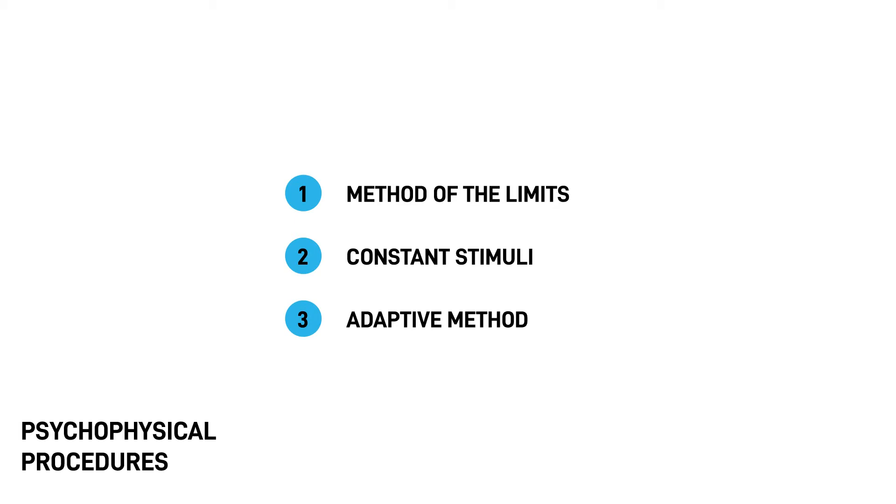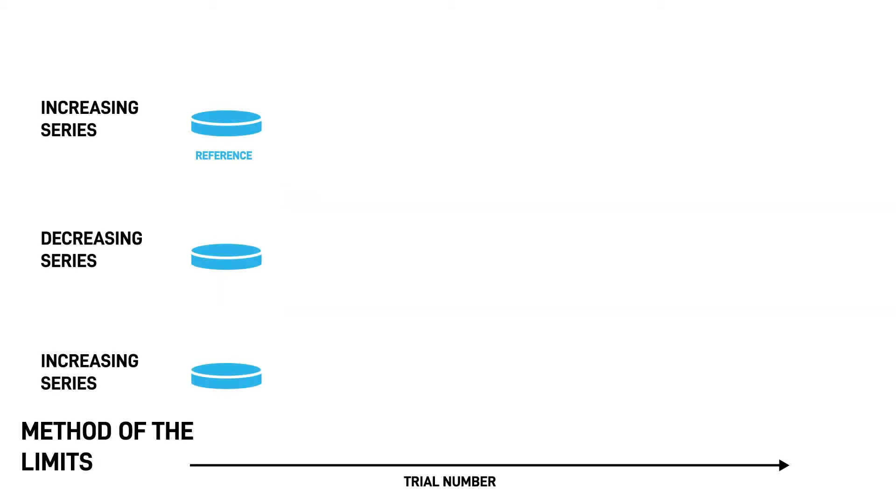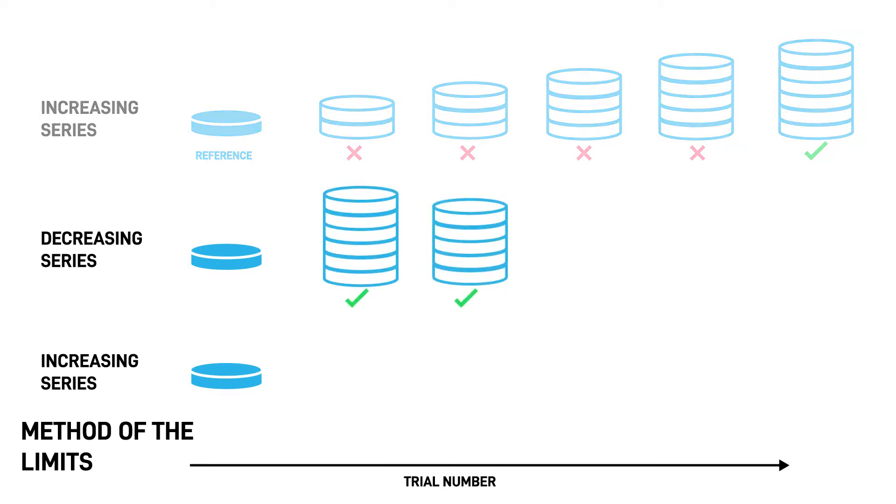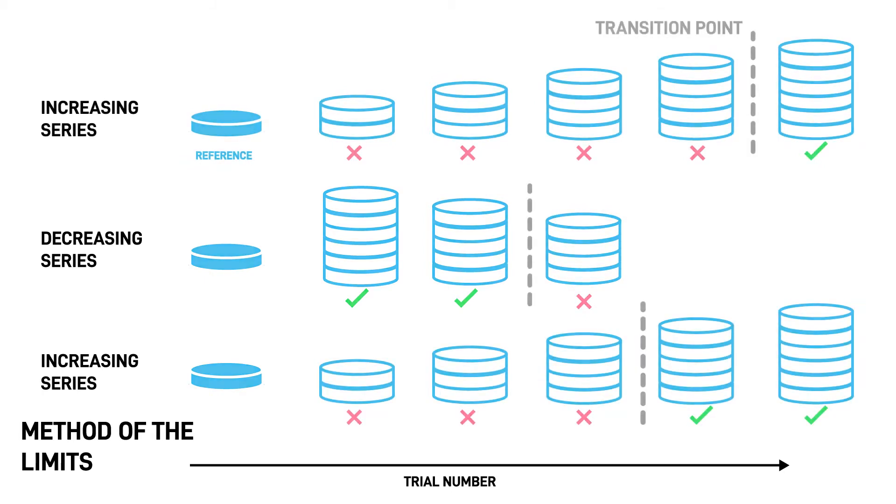The method of limits is based on alternating series of increasing and decreasing differences between the stimuli. In each block, the difference between the comparison stimulus and the reference is either continuously increased until the observer reports that they have become different, or the difference is continuously decreased until the observer reports that the two stimuli have become identical. After a few blocks, the mean of the transition points is calculated as the threshold. This technique is fast, but it depends on the internal criterion of the observer about what is considered a significant difference.